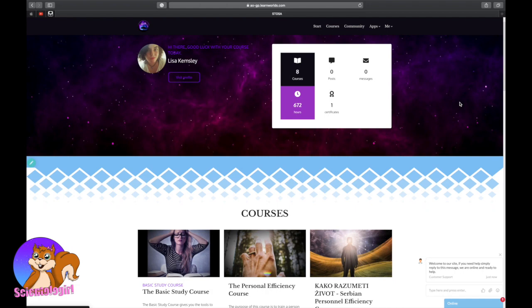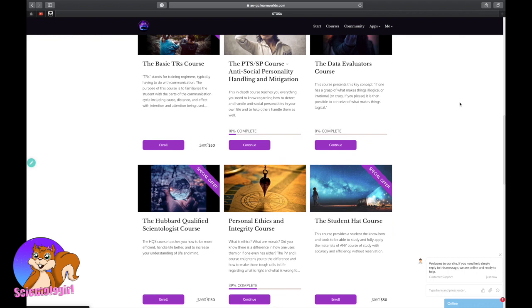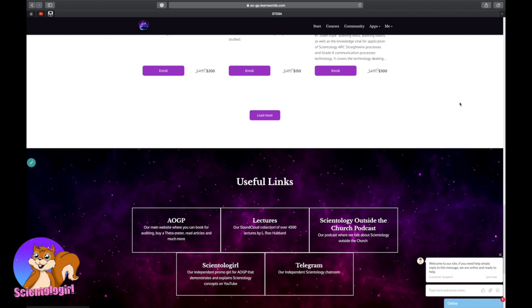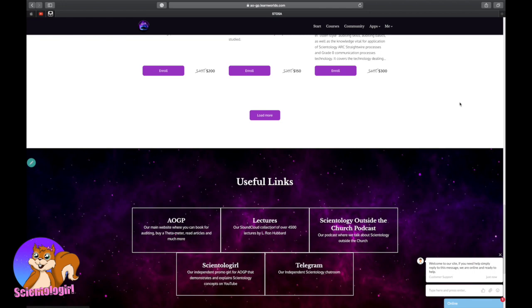In closing, the gist of my video is that if you're keen to try out independent Scientology or if you are an independent Scientologist that wants to try out AOGP, an easy way to know if you're winning or not is to measure your progress. Remember, we have free resources available as well such as books and lectures by LRH, our basic study course, our ethics and personal integrity course and of course our chats are always free.